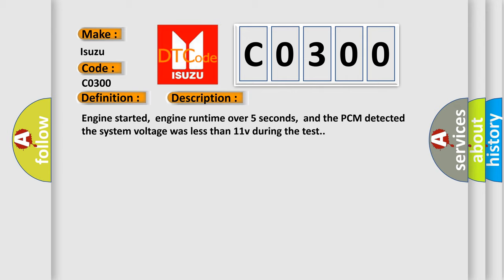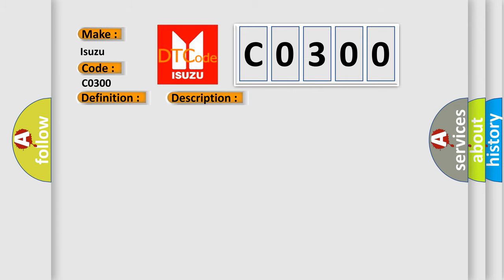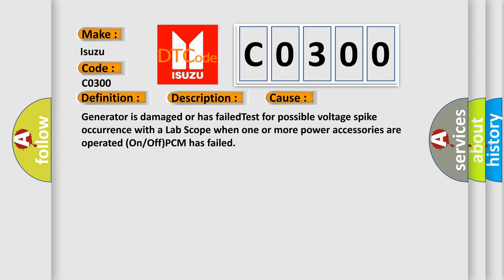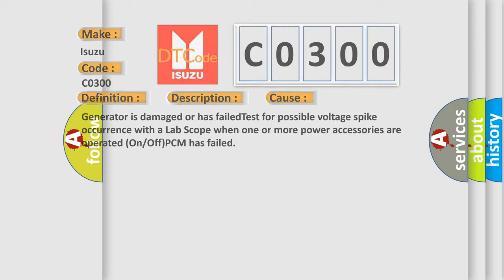This diagnostic error occurs most often in these cases: Generator is damaged or has failed. Test for possible voltage spike occurrence with a lab scope when one or more power accessories are operated on or off. PCM has failed.